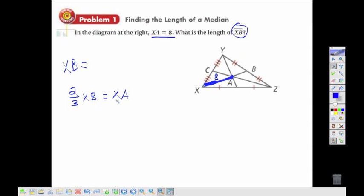Now we're asked to find XB, so we could use this as our formula here. Since we know what XA is, we could say that two-thirds XB is equal to 8. We could solve that by multiplying both sides by 3 over 2, which is going to simplify and give us XB equal to 12.